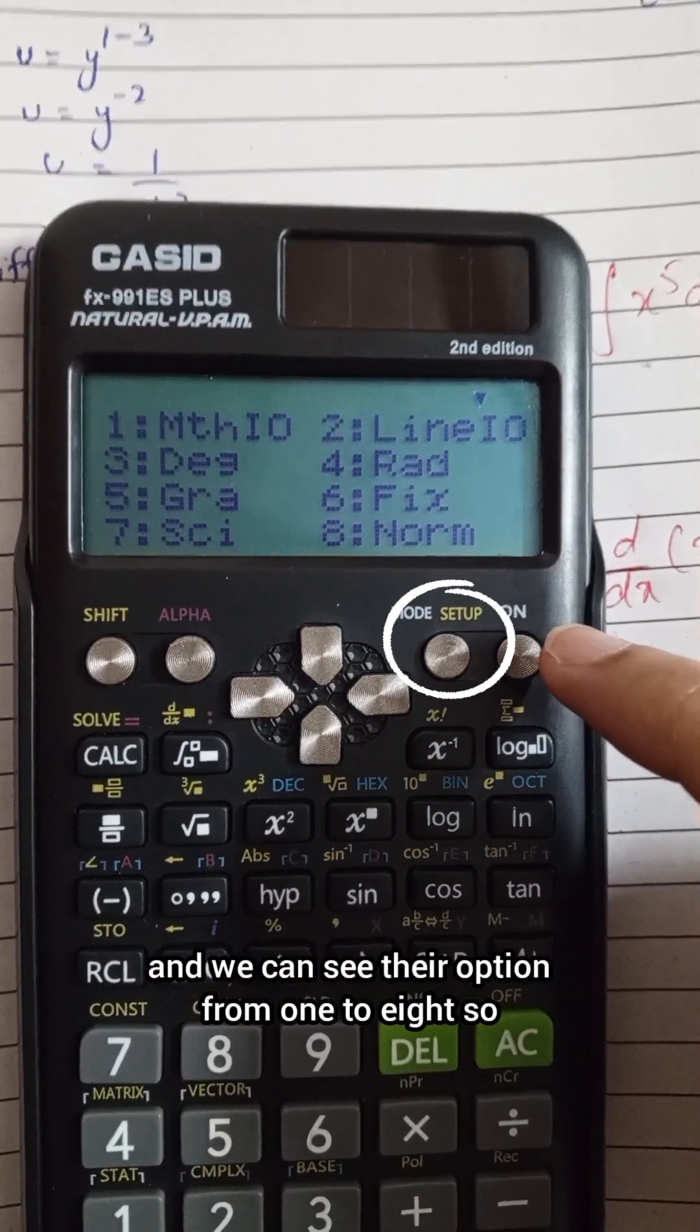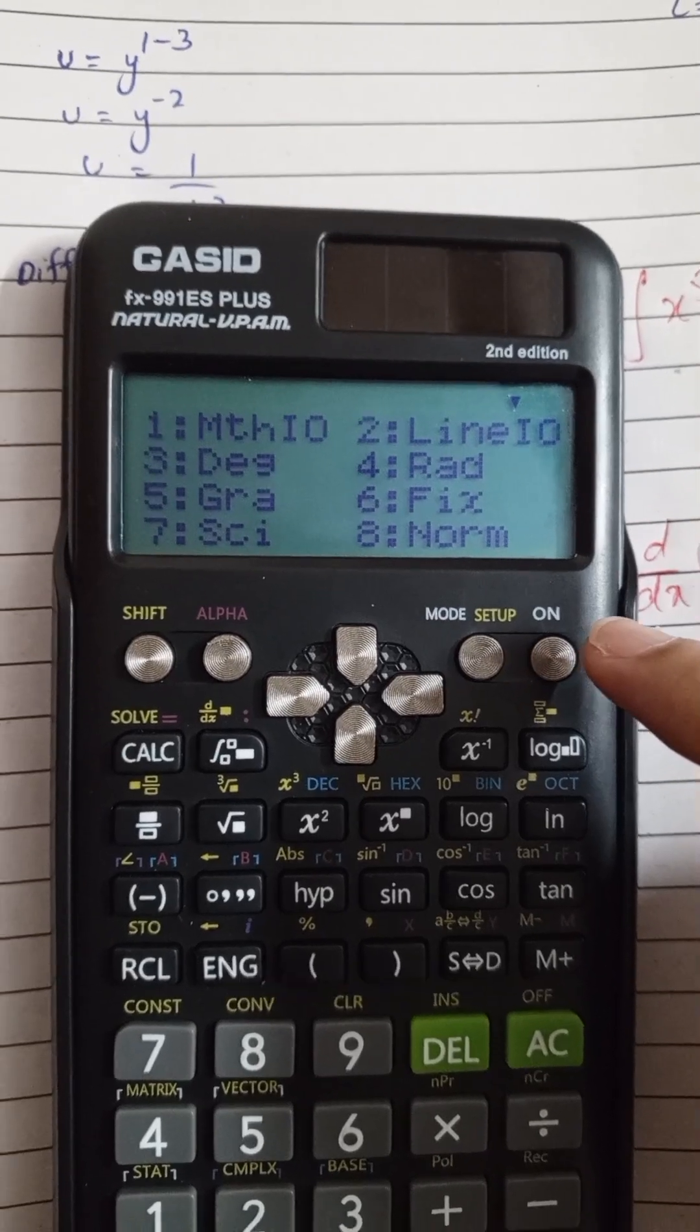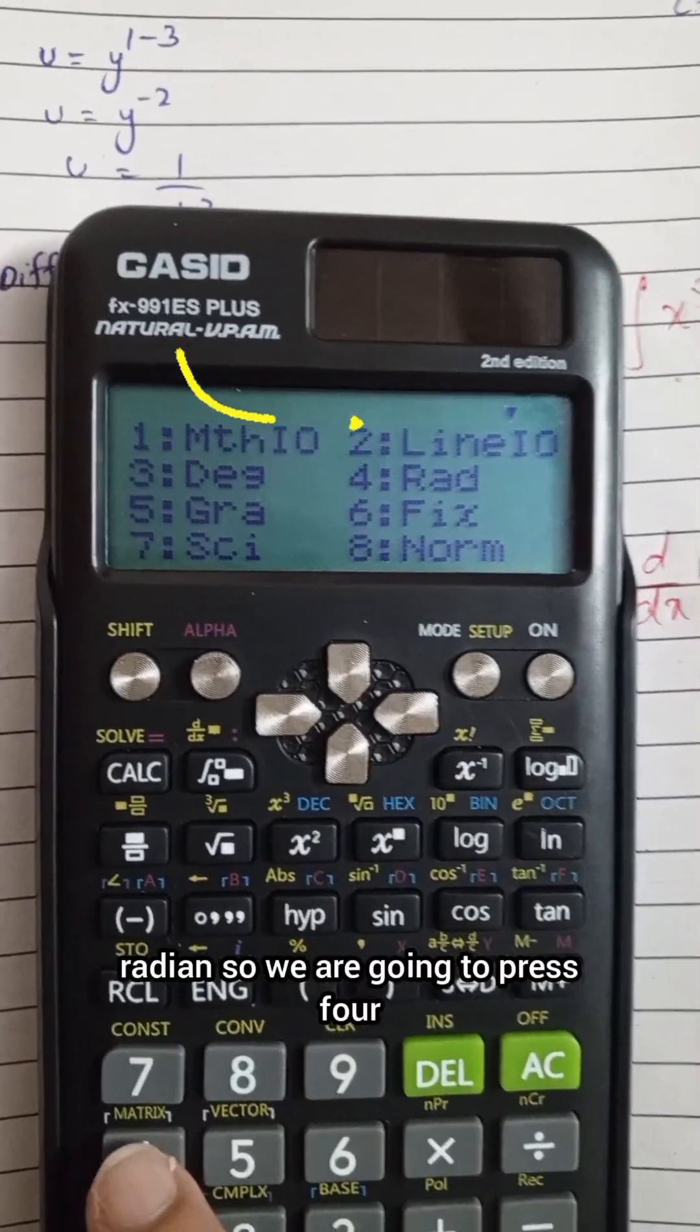We can see options from 1 to 8. Because we need radian, we are going to press 4.